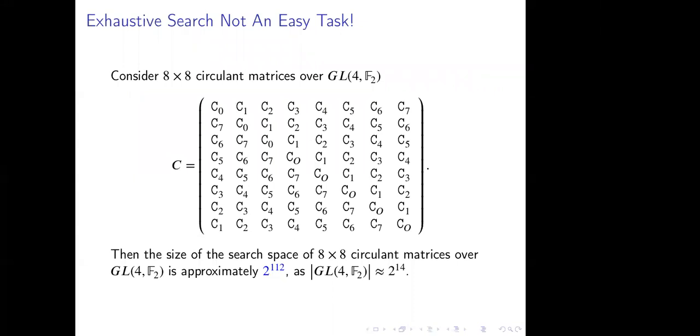As I said earlier, that exhaustive search is not possible through naive approach. We will show it by considering one example of a 8 cross n circulant MDS matrices over general linear group. We have 8 elements C0 to C7, all are elements from general linear GL(4,F2). If we see the size of the search space is approximately 2 to the power 112. As the cardinality of GL(4,F2) is approximately equal to 2 to the power 14, as we know that the cardinality of GL(4,F2) contains 20,160 elements.